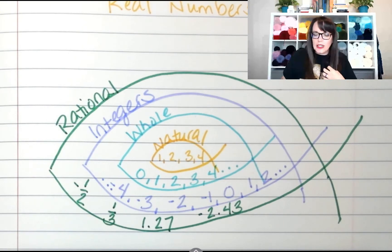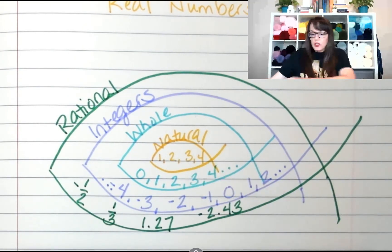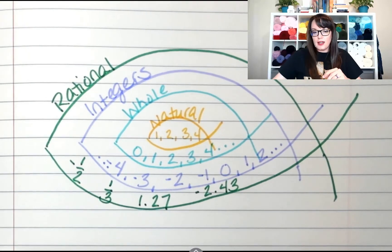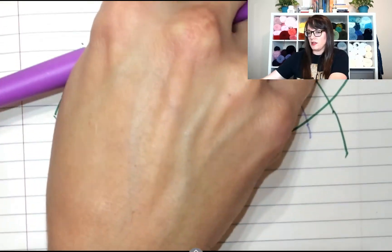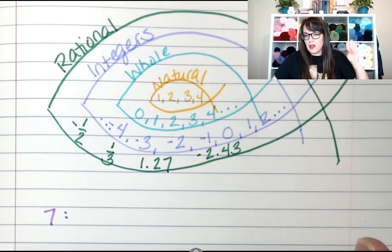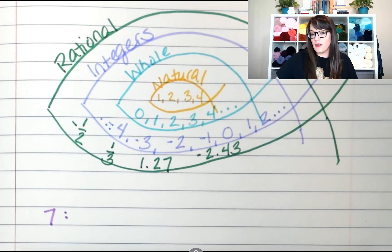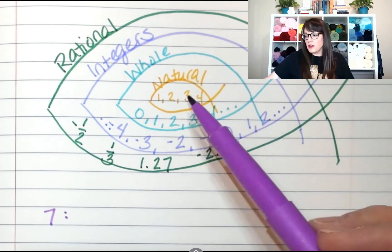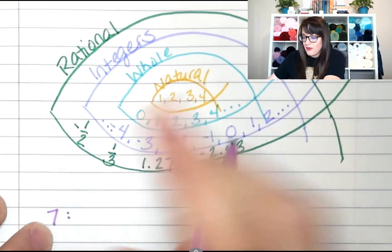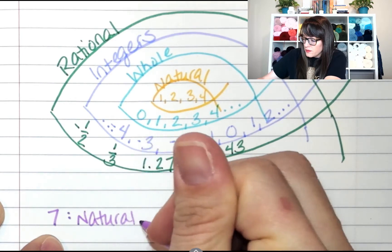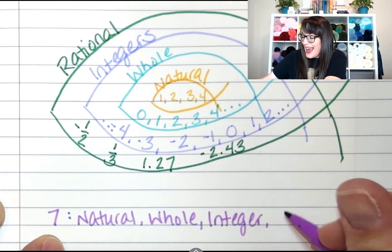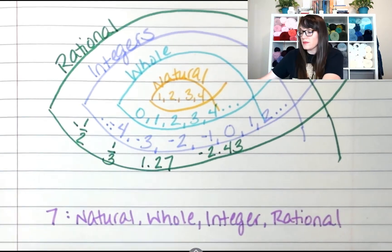Rational numbers still have the other little fish inside them — we didn't forget what we learned in kindergarten. So if I have the number seven, which families does it fit inside? Seven is a natural number, a whole number, an integer, and a rational number. It's all four.